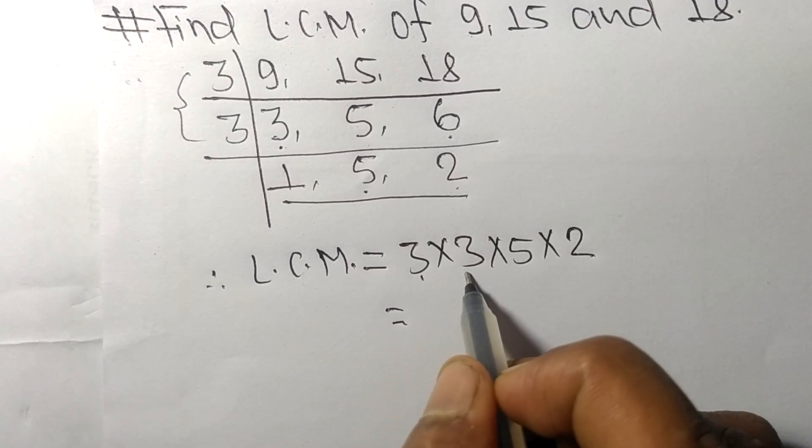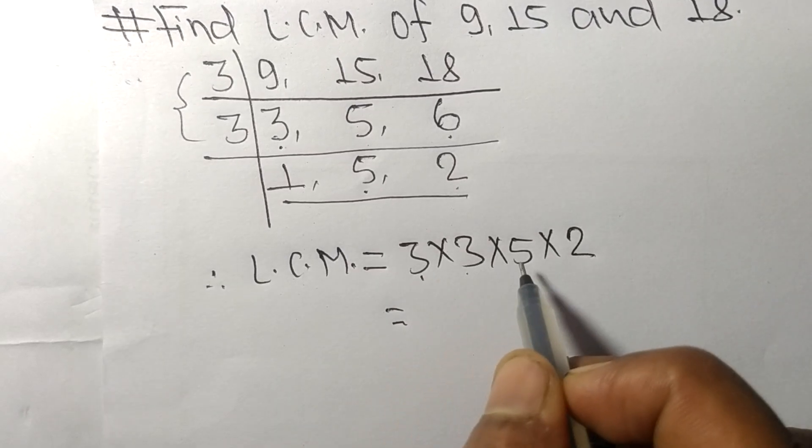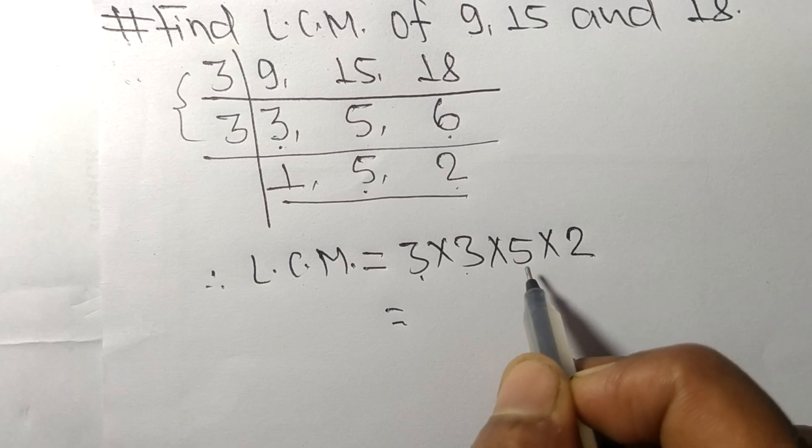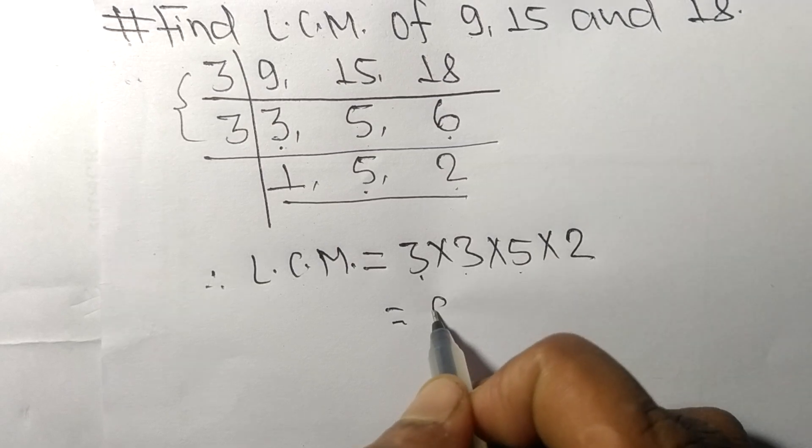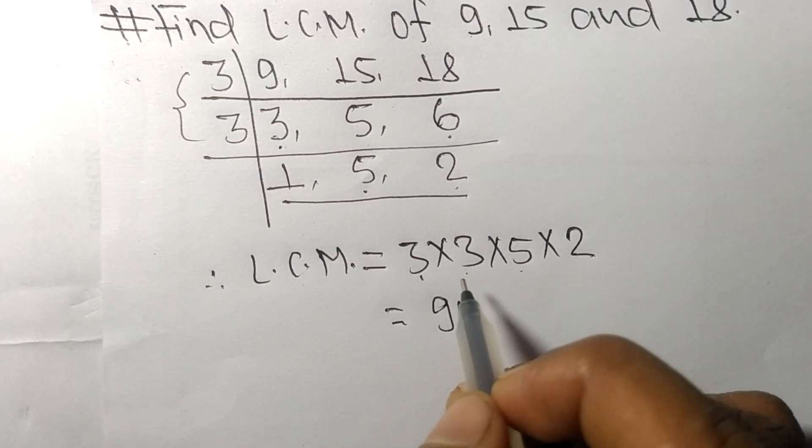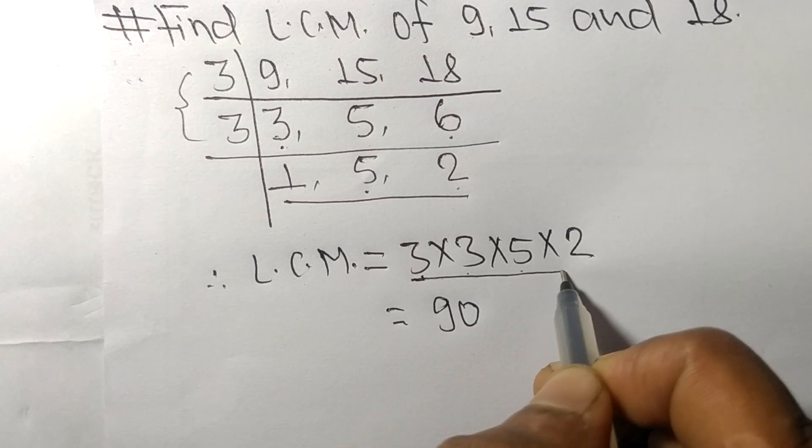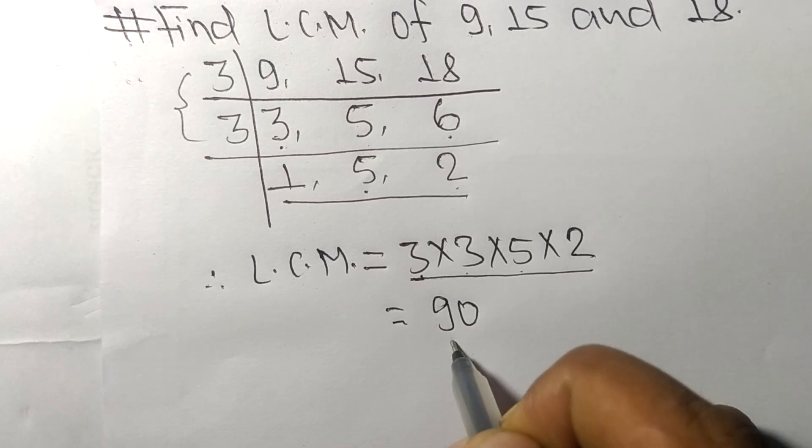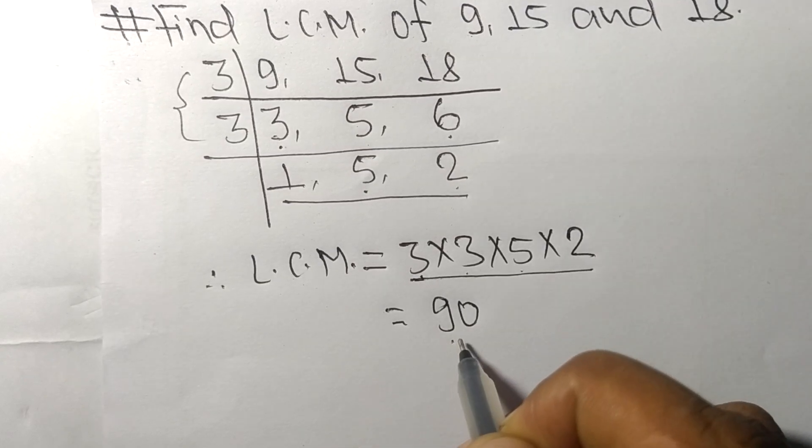3 times 3 means 9. 9 times 5 means 45. 45 times 2 means it is 90.